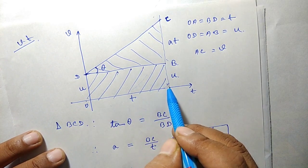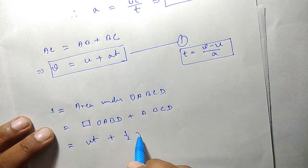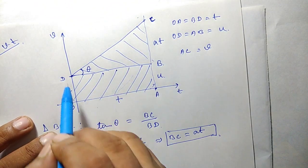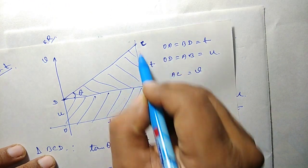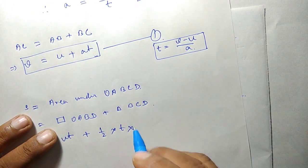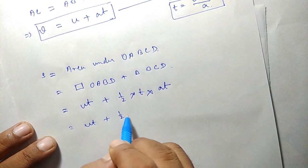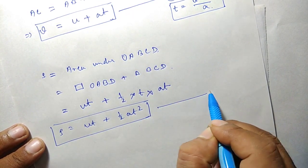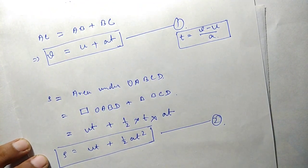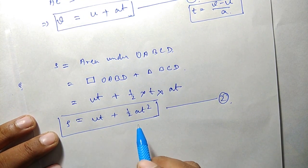The area of rectangle OABD is length into breadth: OA (which is t) into OD (which is u), giving ut. The area of triangle BCD is half into base BD (which is t) into height BC (which is at). So that gives half at squared. Therefore displacement s equals ut plus half at squared. That is already my second equation.